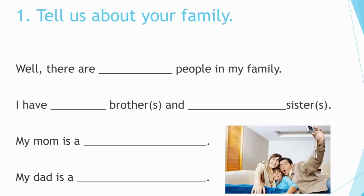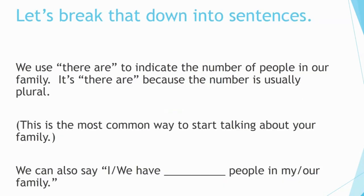Number one: tell us about your family. Well, there are six people in my family. I have one brother and two sisters. My mom is a dentist. My dad is a teacher. We use 'there are' to indicate the number of people in our family. It's 'there are' because the number is usually plural. This is the most common way to start talking about your family.